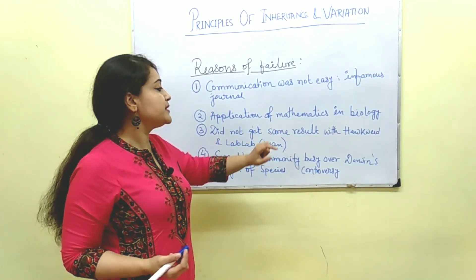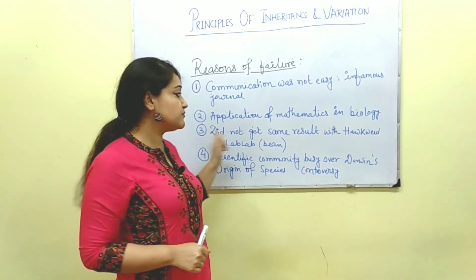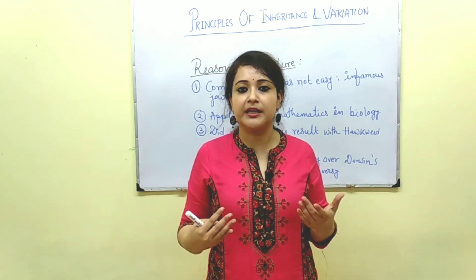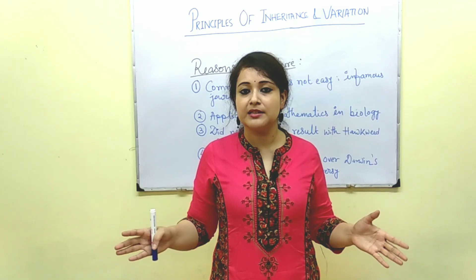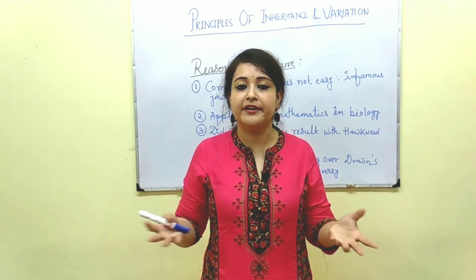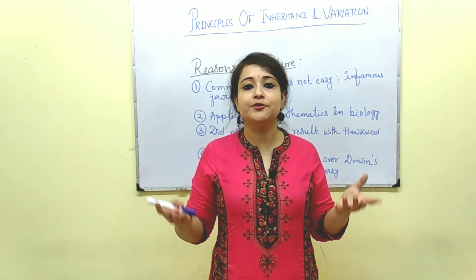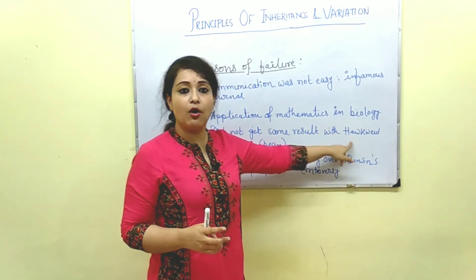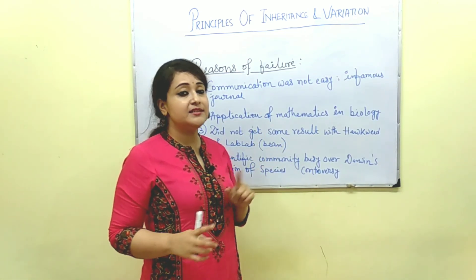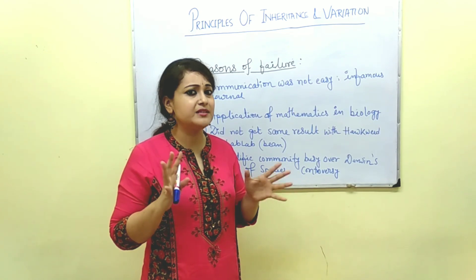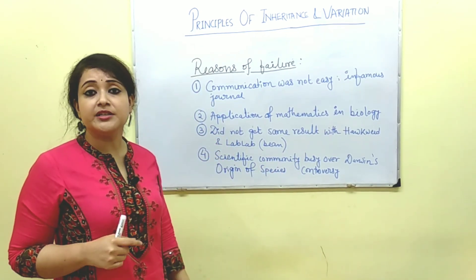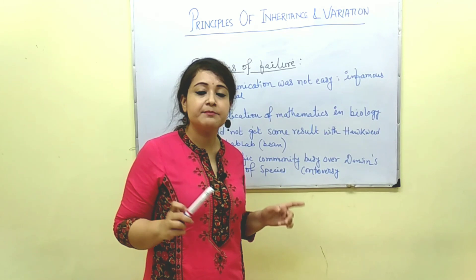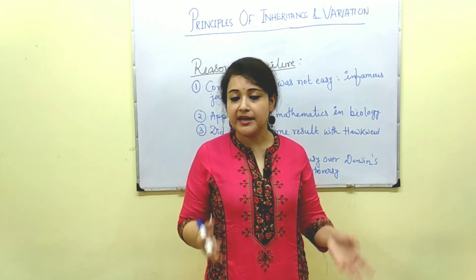Third, he didn't get the same result with the hogweed and the lab-lab variety of beans. Whenever you are going to tell people you have a result, but you yourself are not very sure about your results, how can you make people understand the whole concept? While performing experiments with these two varieties, Mendel didn't get the same result, so he himself was a bit confused. Fourth, the scientific community at that time was very busy over Darwin's 'Origin of Species' controversy, so no one paid much attention to Mendel's work.